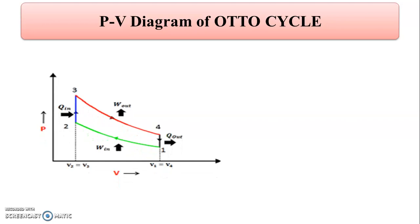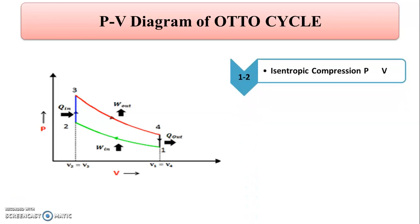The figure shows the Pressure-Volume diagram for the Otto Cycle, in which process 1 to 2 is isentropic compression. During this isentropic compression process, the pressure increases from P1 to P2, and the volume decreases from V1 to V2.